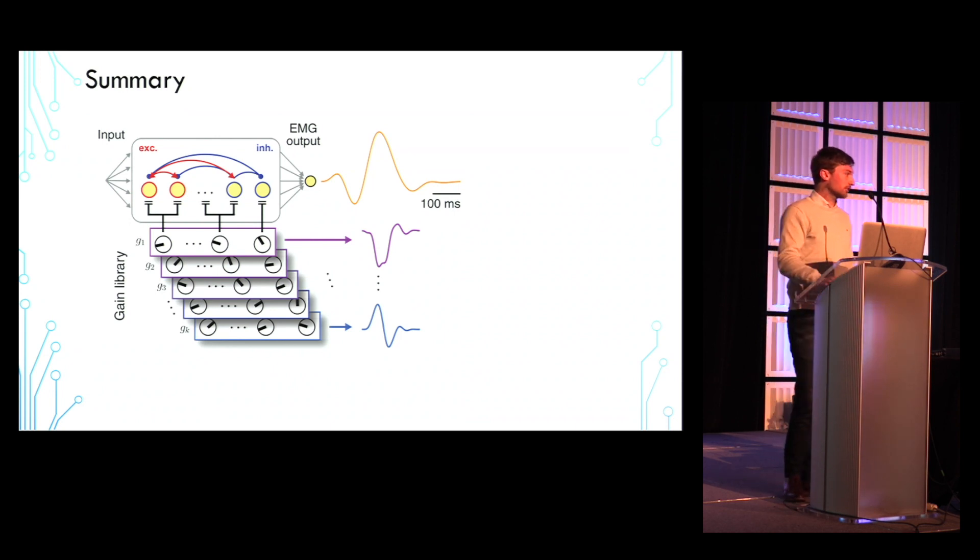Nice work. Thank you. So in spiking networks, we think a lot of what controls the gain is sort of the background activity the cells get and the shape of that within the shape of the membrane potential distribution. So I'm wondering, have you thought about how you might change the FI curves you're showing?